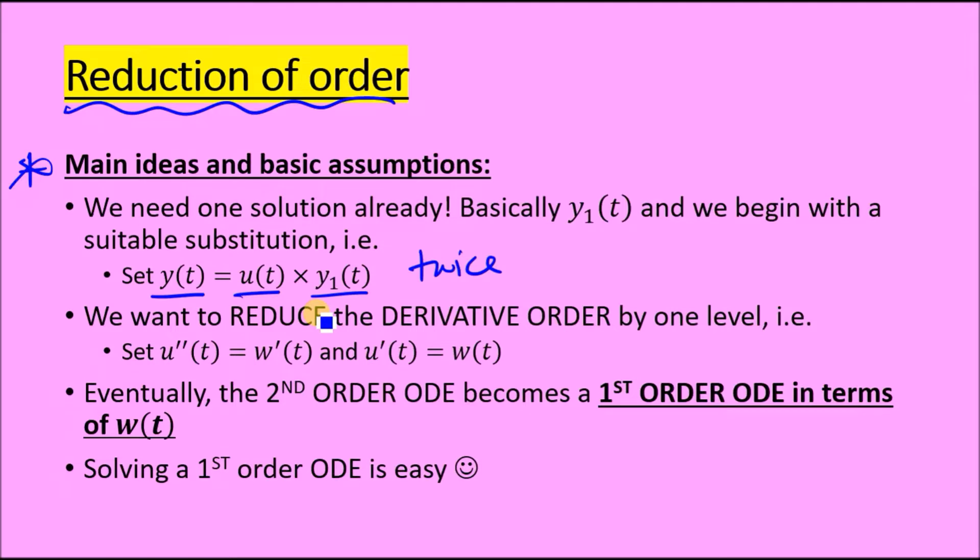Now this is where the reduction order actually kicks in. At this point, the reduction order is literally telling us to reduce the derivative order by one level. That's pretty much the main part of it. Doing so, you're going to set u double prime as a new variable w prime, and then u prime to just a regular w. You can see it's gone down by one level - two to one and one to zero.